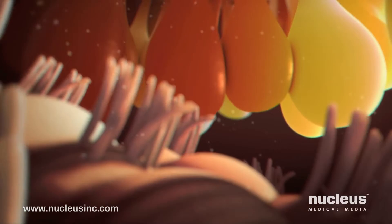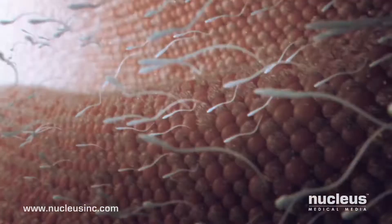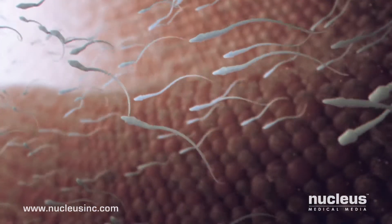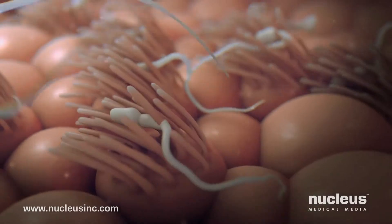Inside the fallopian tube, tiny cilia push the egg toward the uterus. To continue, the sperm must surge against this motion to reach the egg. Some sperm get trapped in the cilia and die.